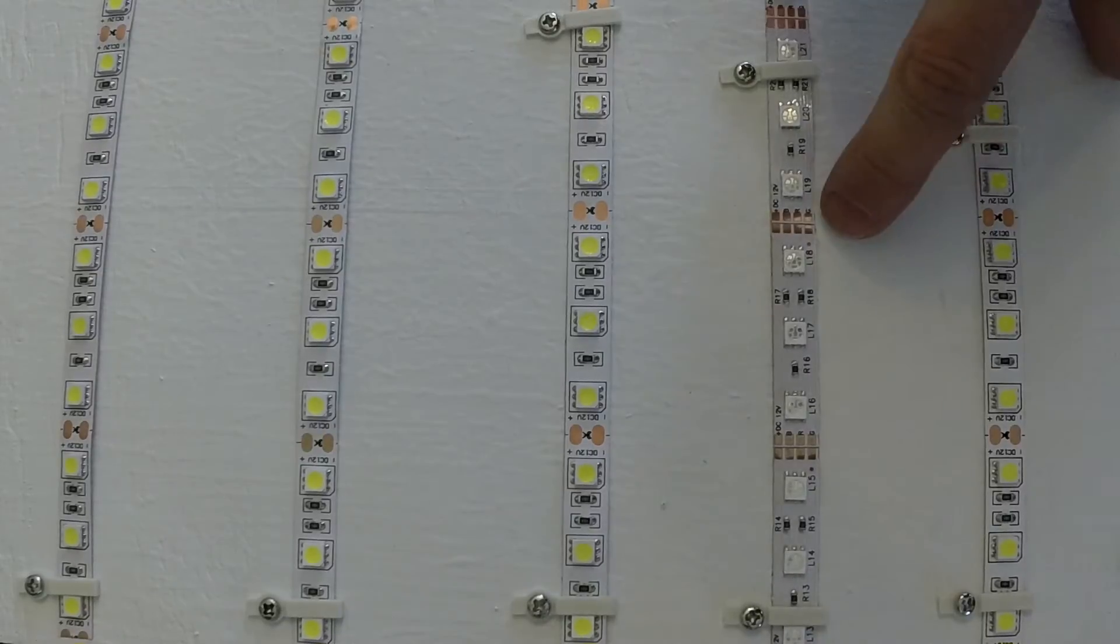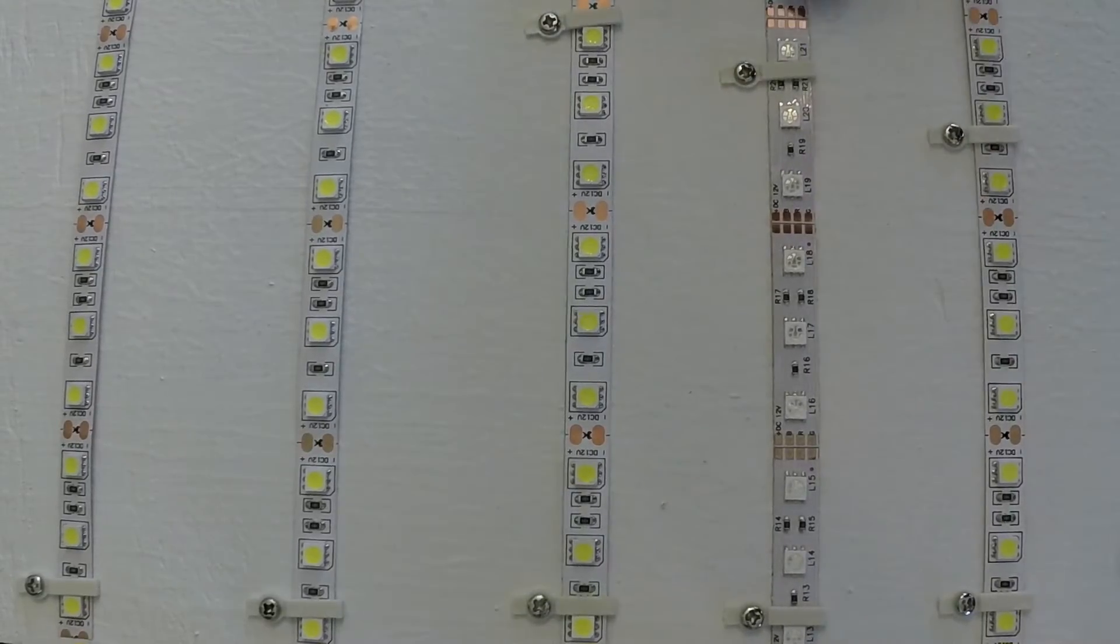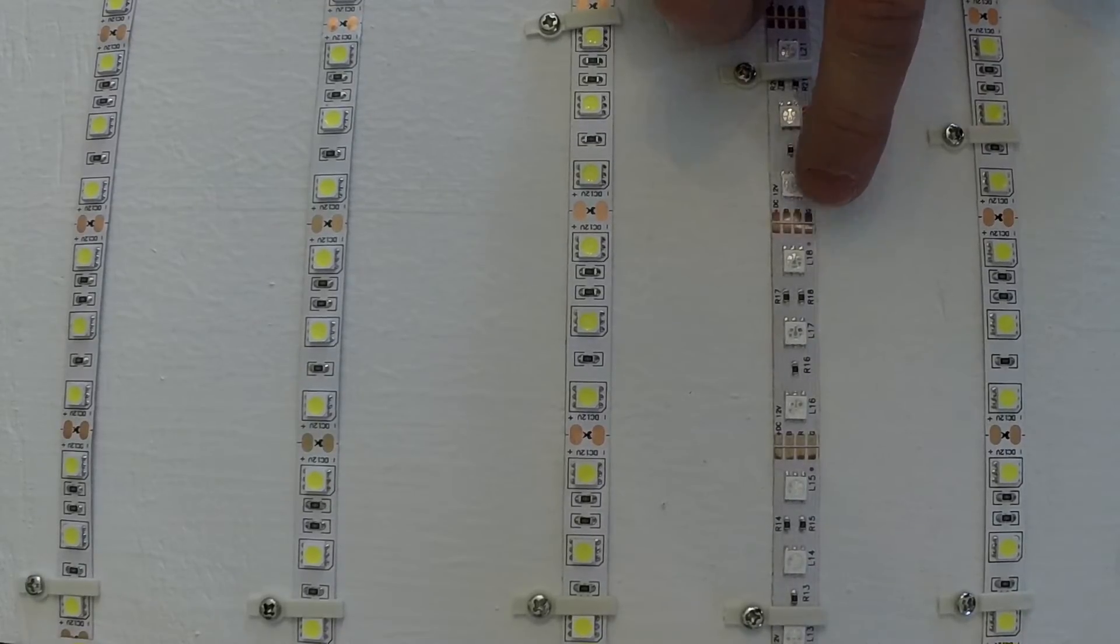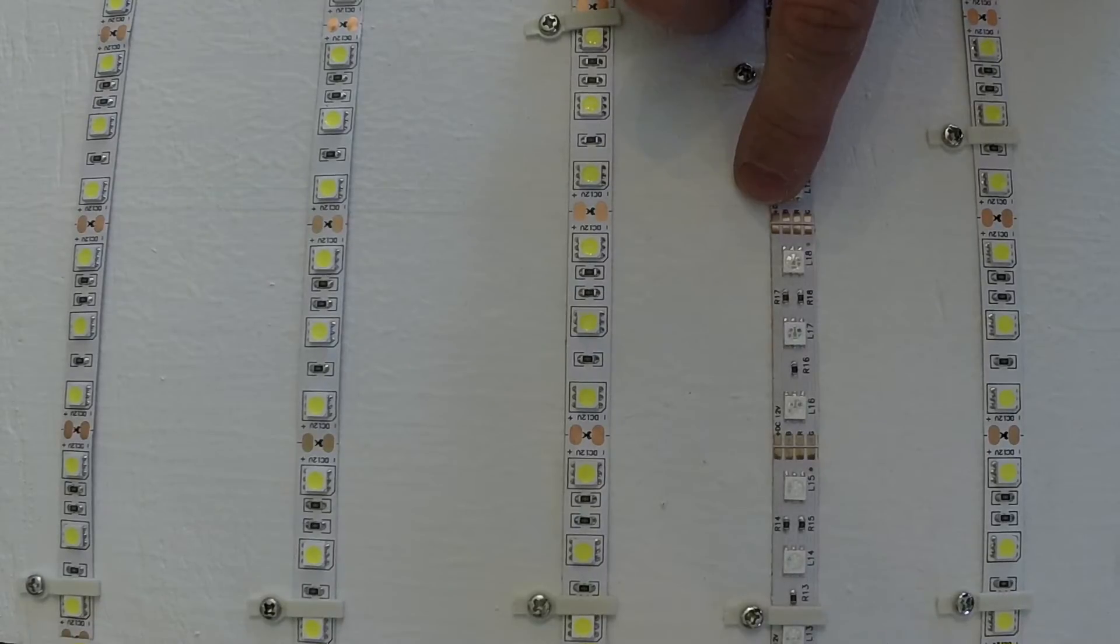So, every three LEDs, you can see there's copper pads. Let me stay in frame. There's copper pads right here. And then on RGB, of course, you have the DC positive. These are all 12 volt. And then the red, green, blue will be your negative wires.